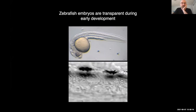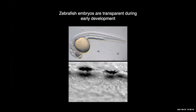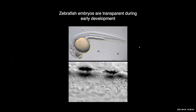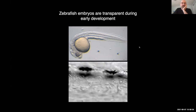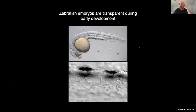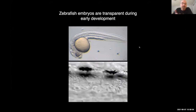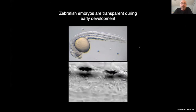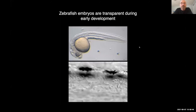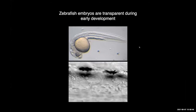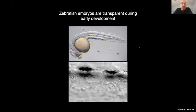Zebrafish embryos develop externally, have rapid development, and they're also transparent, so we can see right through them. We can see the blood vessels as they form and see circulation in the developing embryo. Because they develop so rapidly, this circulatory system — with a beating heart and circulating blood cells in vessels — is apparent by as early as 30 hours after the eggs are fertilized. Between days one and two of development they have a complete and functional circulatory system.